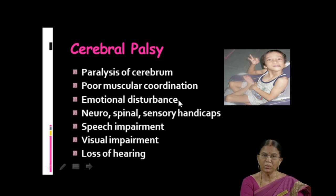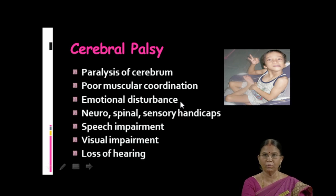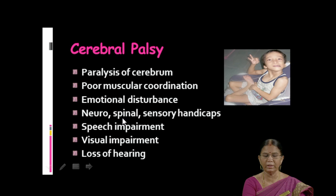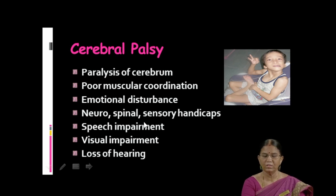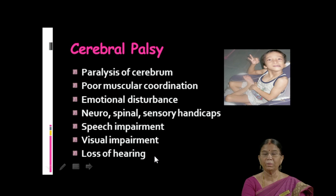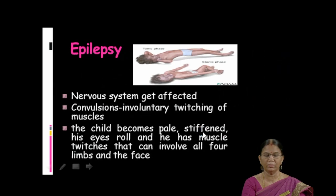Most children with special needs may have emotional disturbance. They often want to sit alone and feel irritable. Cerebral palsy children may also have neurological, spinal, and sensory handicaps. Along with this, speech impairment might be there, and sometimes visual impairment also. Because of speech impairment, there might be loss of hearing as well. So this is one type of physically handicapped child. The other one is epilepsy.